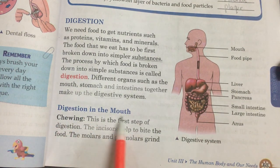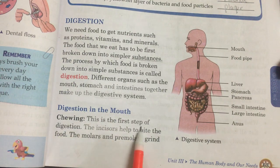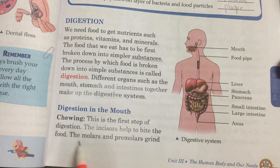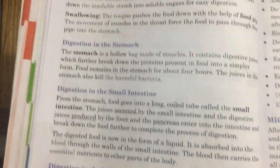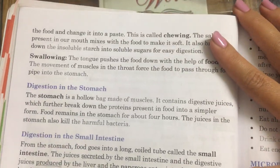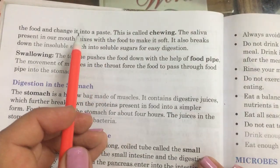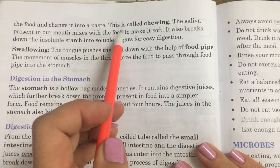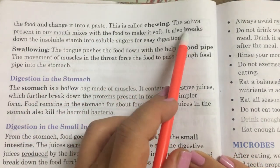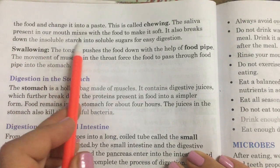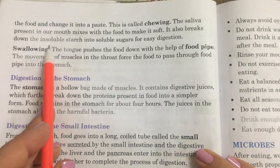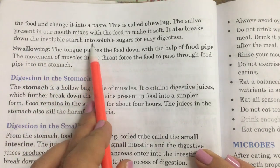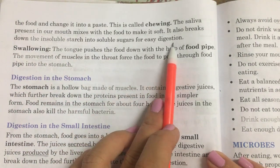Digestion in the mouth — chewing. This is the first step of digestion. The incisors help to bite the food. The molars and premolars grind the food and change it into a paste. This is called chewing. The saliva present in our mouth mixes with the food to make it soft. It also breaks down the insoluble starch into soluble sugars for easy digestion.